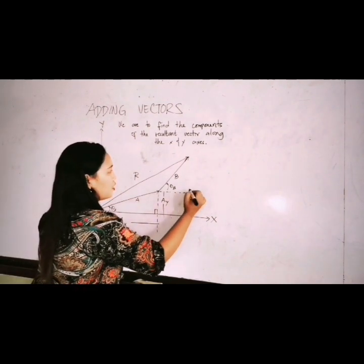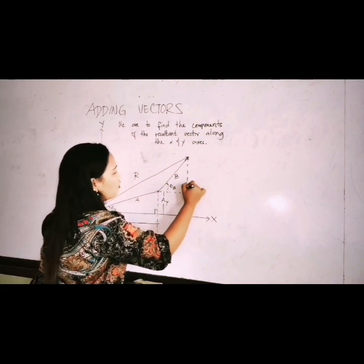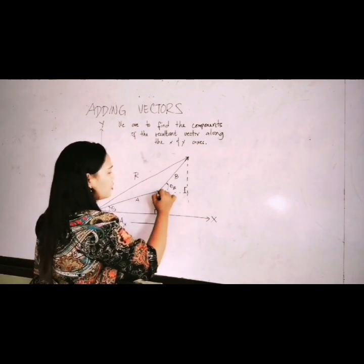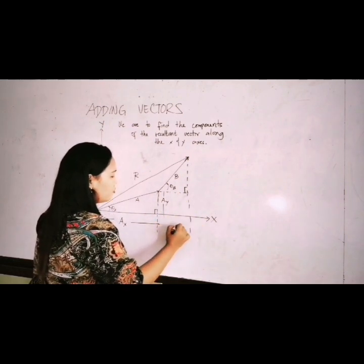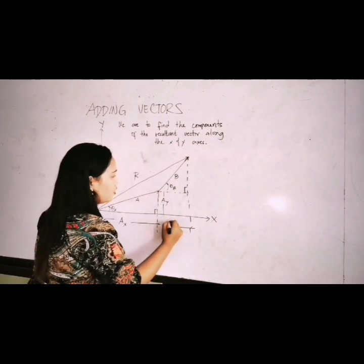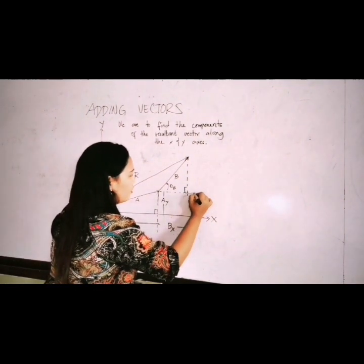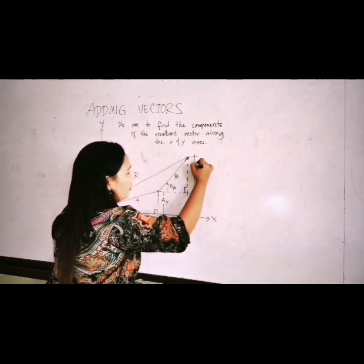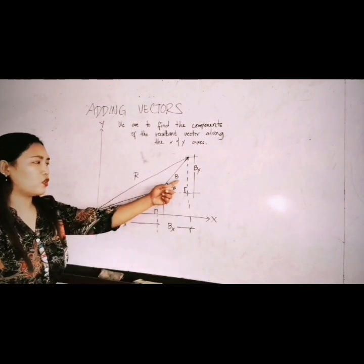Now, what about b? Let's say this one is B sub x, the horizontal component of B. And from here also, to here, this is B sub y, the vertical component of vector B.